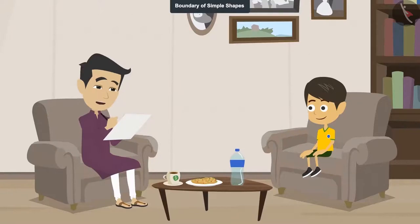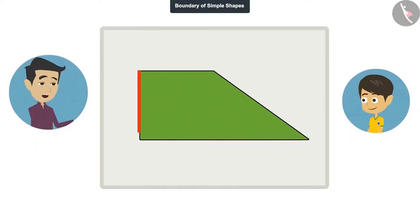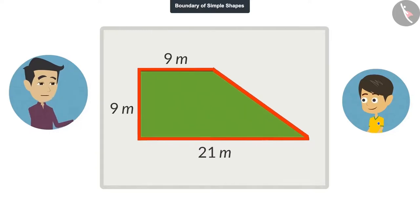I will tell you the length of all these lines. Find out the length of the boundary and tell me. Okay, tell me the length of all the lines. The length of this line is 9 meters. The length of this line is also 9 meters. The length of the bottom line is 21 meters. And the length of this slanting line is 15 meters.